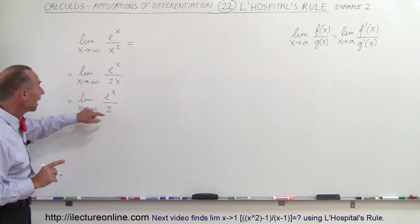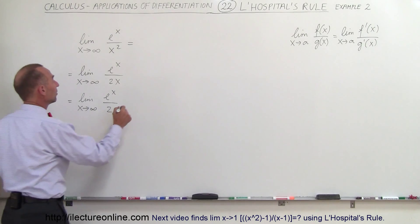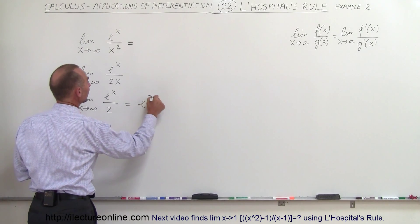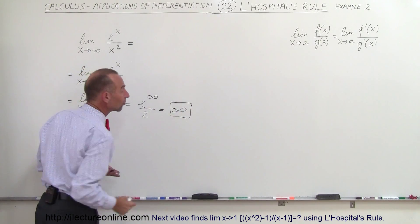Now we don't have any x in the denominator, now we can allow x to go to infinity. So now we can say that this is equal to e to the infinity divided by 2 which is simply infinity and that is the proper answer.